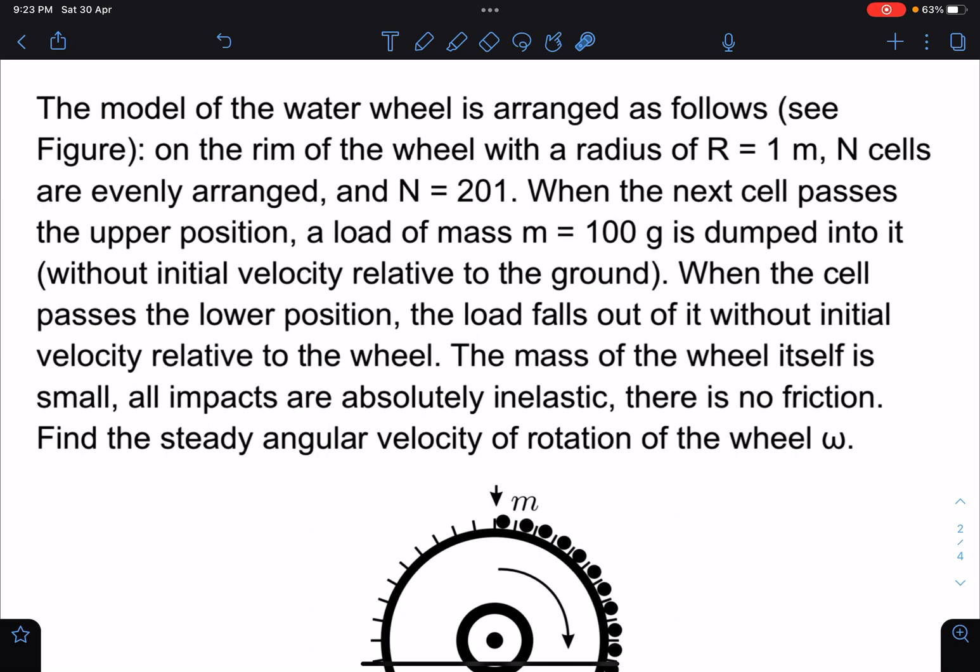You can see small balls are falling in these shells without any initial velocity relative to the ground. So they are just releasing it. When the cell passes the lower position, the load falls out without any initial velocity relative to the wheel.